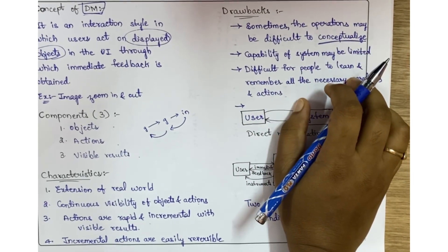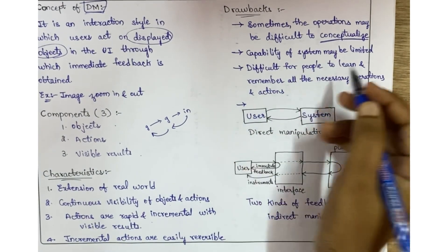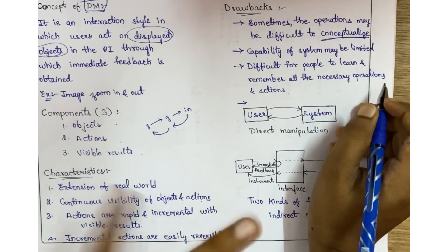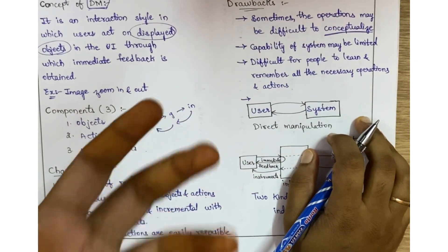Sometimes the capability of the system may be limited, and it is difficult for people to learn and remember all the necessary operations and actions. These three are the drawbacks, and because of these drawbacks, indirect manipulation has come into existence.